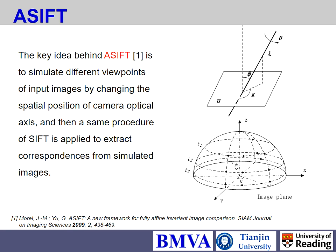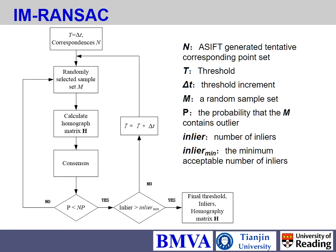For those interested in ASIFT itself, you can refer to the original paper. The key point of ASIFT is that it handles cameras in different positions with different scales and view angles. For improved RANSAC, instead of using a hard threshold, we use an incremental approach to gradually find the best process, which helps find sufficient matching points without many outliers.